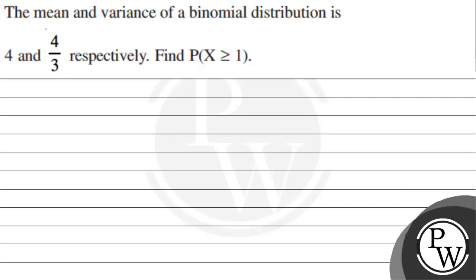Hello, let us read the question. The question says: the mean and variance of a binomial distribution is 4 and 4 by 3 respectively. Find P of X greater than or equal to 1.